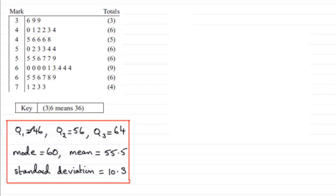What I've done is I've just brought back or summarized the values for the lower quartile, median and the upper quartile, the mode, mean and standard deviation of values we found in the earlier parts of the question.